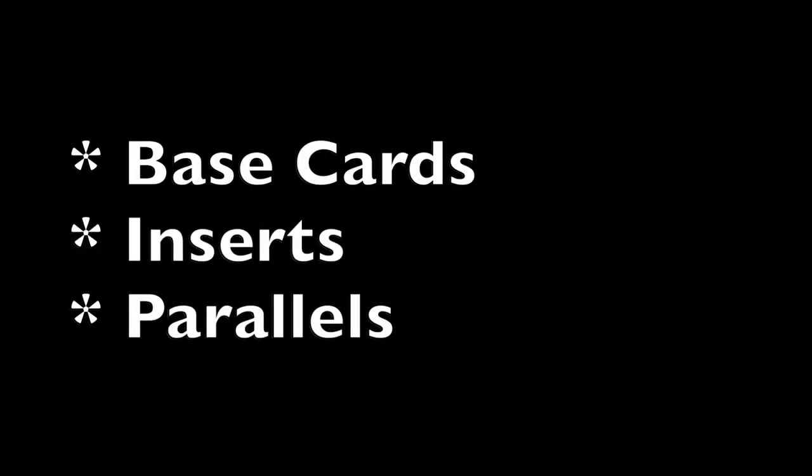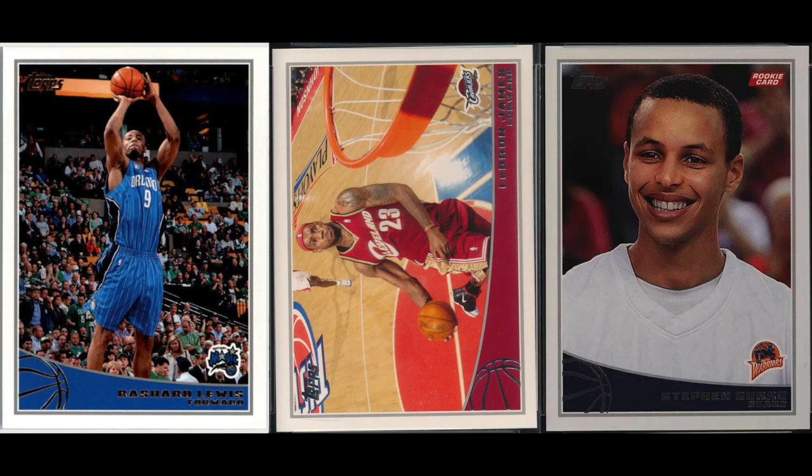All cards fit into one of three categories — well, all modern cards anyway. Base cards, inserts, and parallels. Technically, there are parallel inserts as well, but let's not go crazy here. Base cards refer to cards from the basic set. For example, 2009 Topps Basketball — it's a set with 330 cards in it. All 330 cards are base cards, whether it be the stars, the commons, the rookies, whatever. When you buy a pack of cards, you usually get mostly base cards. The vast majority of cards in the hobby are base cards.